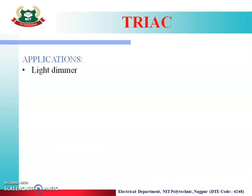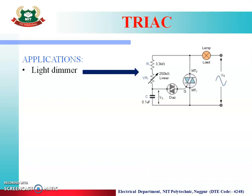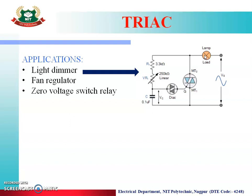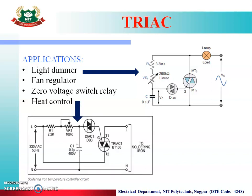The applications of TRIAC: TRIAC is used in a light dimmer circuit, which controls the brightness of a lamp. It is also used in a fan regulator circuit — this circuit is the same as the light dimmer circuit, except the load is a fan instead of a lamp. TRIAC is also used in zero voltage switching relays and in heat control circuits.